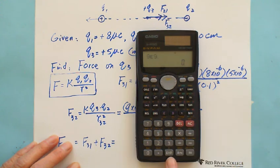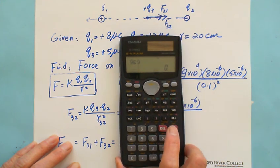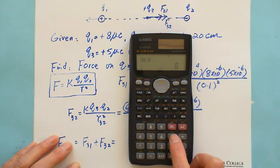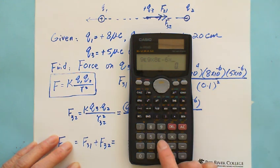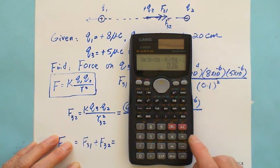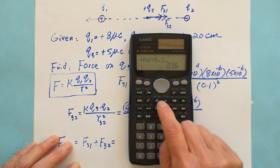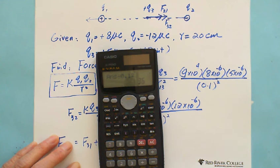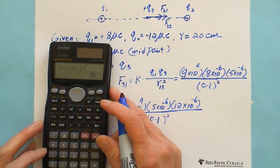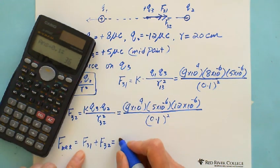Then multiply 8 exponent negative 6, and multiply 5 exponent another negative 6, and equal, and divide it by 0.1 squared. You get the force is 36 Newton.